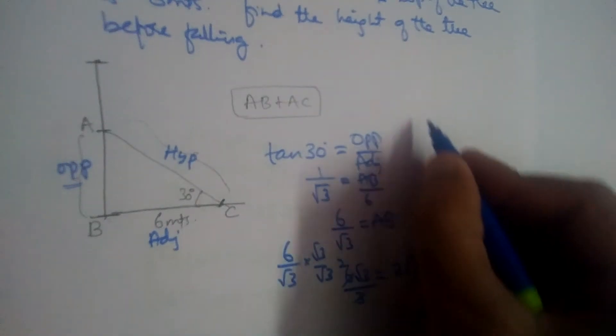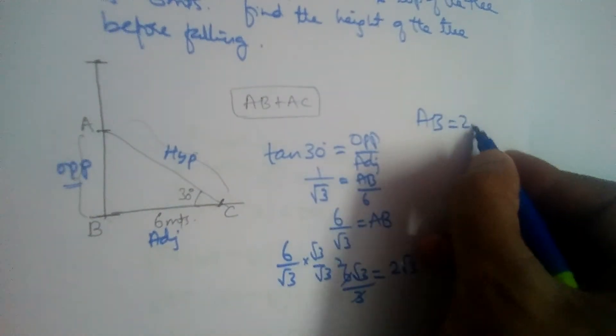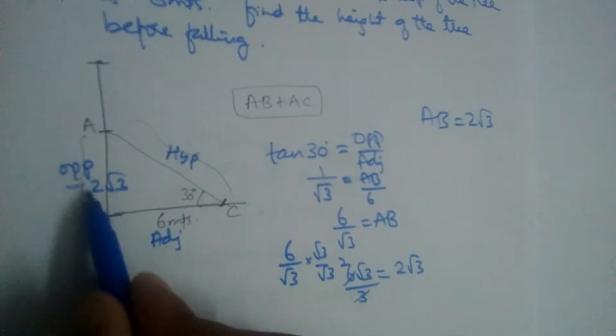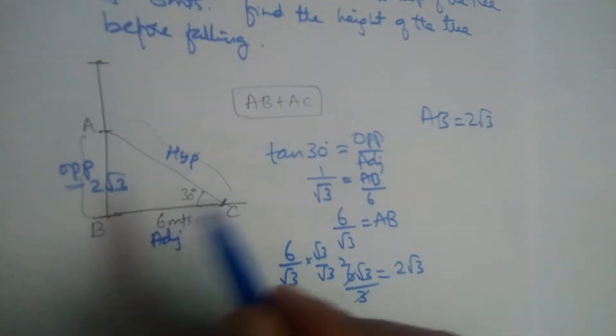So AB is equal to how much? AB is 2 root 3. Now let us find AC. This is 2 root 3. We can use Pythagoras theorem now and find AC.